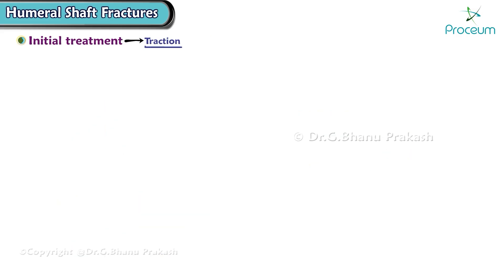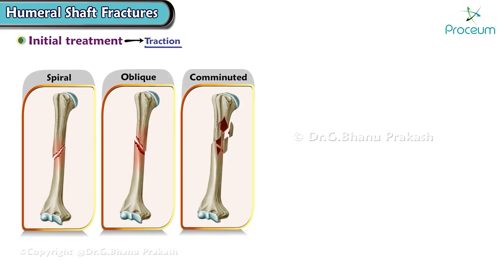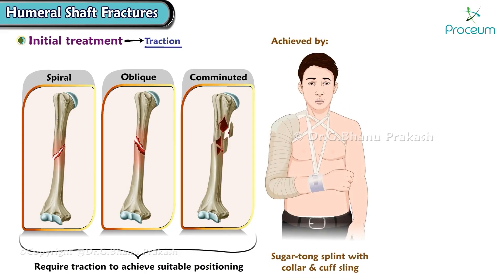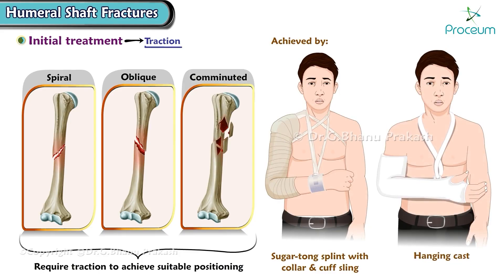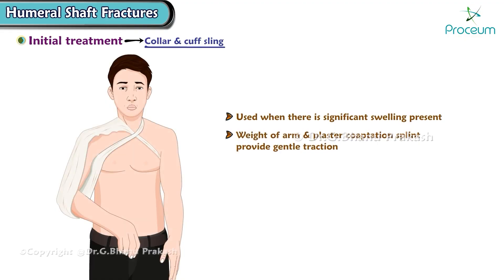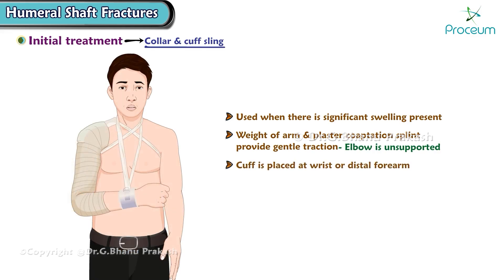Some spiral, oblique, and comminuted fractures may require traction to achieve suitable positioning. This can be achieved using a sugar-tong splint with a collar and cuff sling or a hanging cast. The collar and cuff sling can be used when there is significant swelling, as the weight of the arm and the plaster coaptation splint provide gentle traction when the elbow is unsupported and the cuff is placed at the wrist or distal forearm.